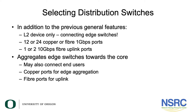The distribution switch aggregates the edge switches towards the core of the network. They may also be used to connect end users in the initial rollout of a campus network, and later on as more edge switches are added, those users get moved out to the edge. Copper ports could be used for the edge aggregation and the fiber ports for the uplink.